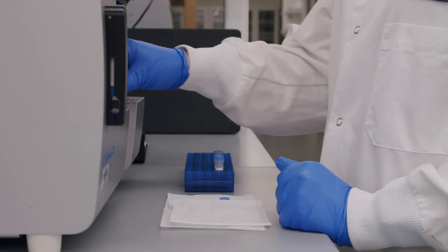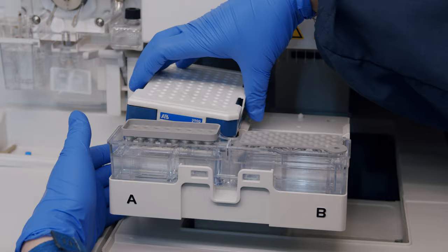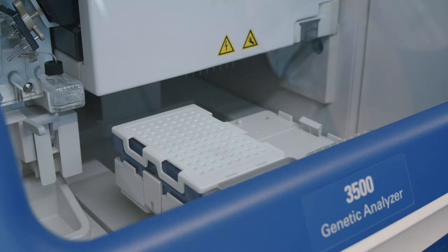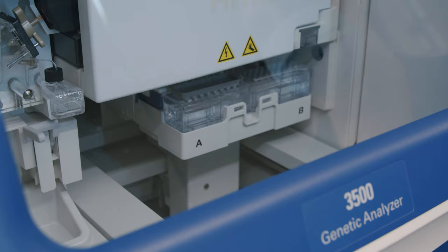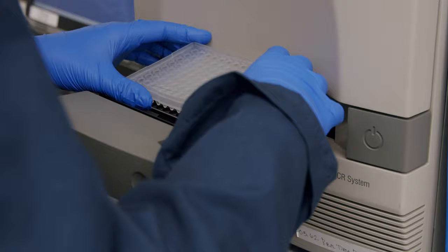After I know how much DNA is in the sample, I use additional chemicals and another instrument that works like a copy machine. It looks at the specific locations that we're interested in as forensic scientists, and makes enough copies of those locations that we're able to view it on a final instrument, which creates or shows us a DNA profile and a picture representation.